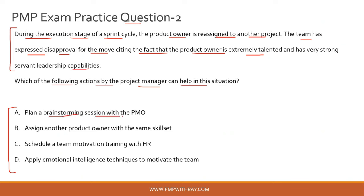Option A: plan a brainstorming session with the project management office. This is random — why would the PMO sit and do a brainstorming session for your specific project? They have a portfolio of projects they are managing. It is your problem that your team is demotivated, so you need to manage it yourself. Involving the PMO is a very far-fetched option here, so option A is outrightly incorrect.